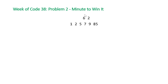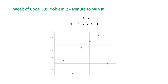Here we have n equal to 6, which is the number of elements in our array, and k equal to 2. For visual purposes, we are going to change 2 to negative 3 and 85 to 0. If we visually map this, the question is basically asking us to find a line that goes through the maximum number of points.